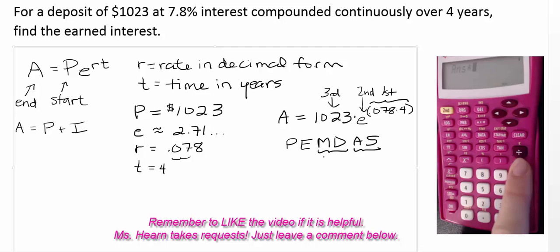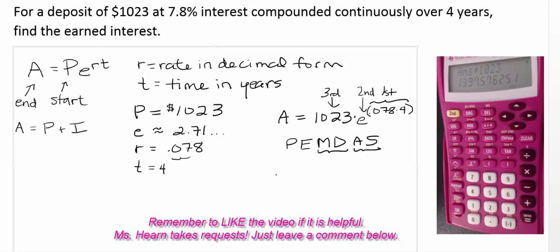So I'm going to multiply that now times the principle. The principle was the coefficient of E. 1,023 equals, A equals 1,397.58, rounded to the nearest cent.